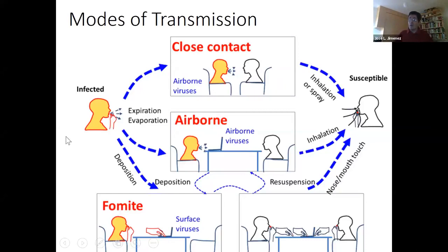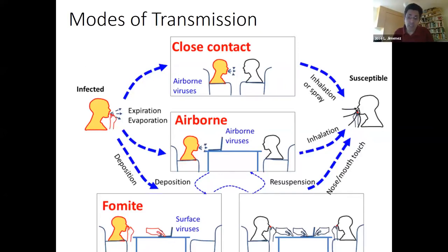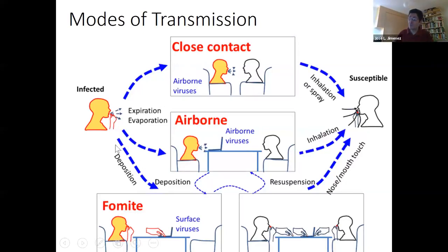Dr. Jimenez introduces the three modes of transmission for respiratory diseases like COVID-19. The first is fomite transmission through surfaces — touching an infected surface and then touching your nose. There is evidence this is real, but the CDC agrees it is not the major route, accounting for perhaps 15-20% of transmission. Everyone agrees the virus transmits through the air in one of two ways, and there is more debate about which way is more important.